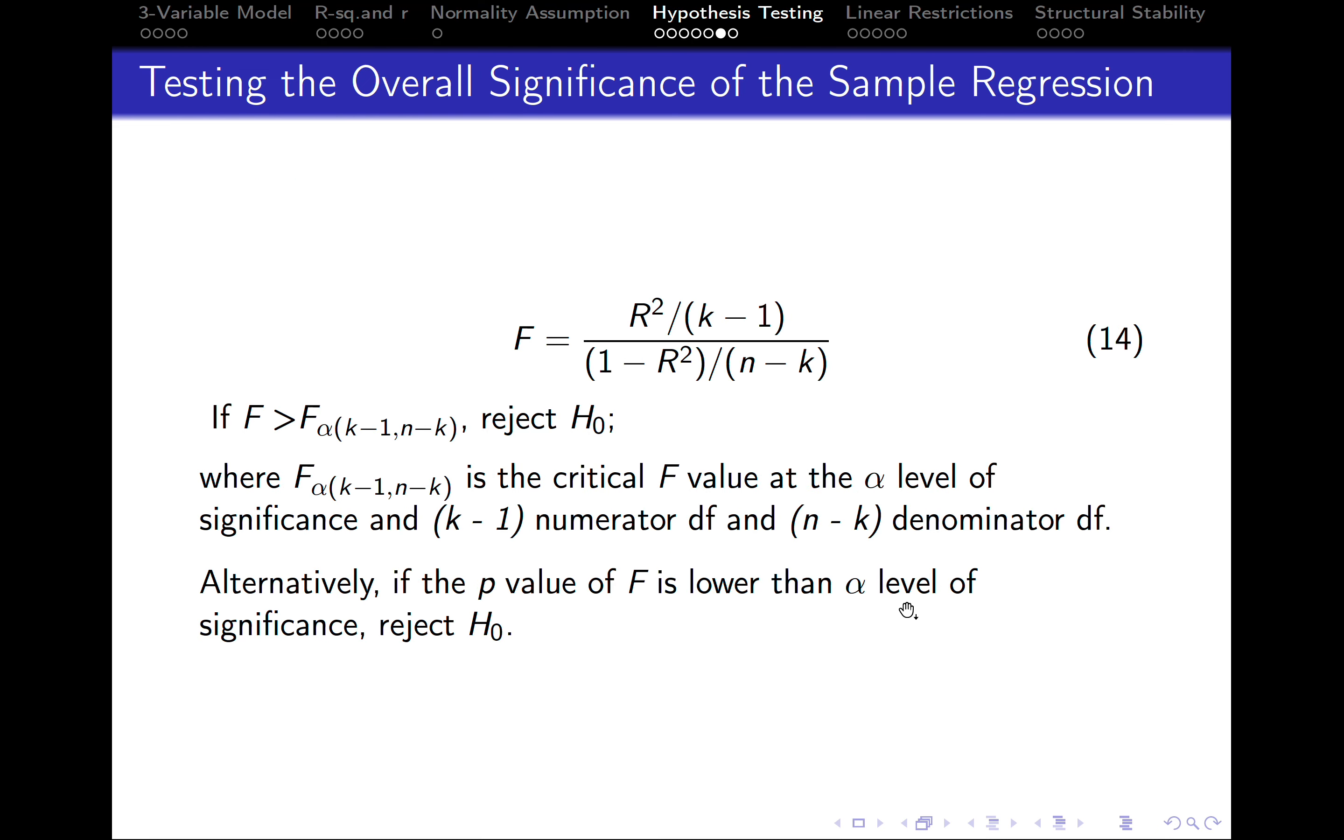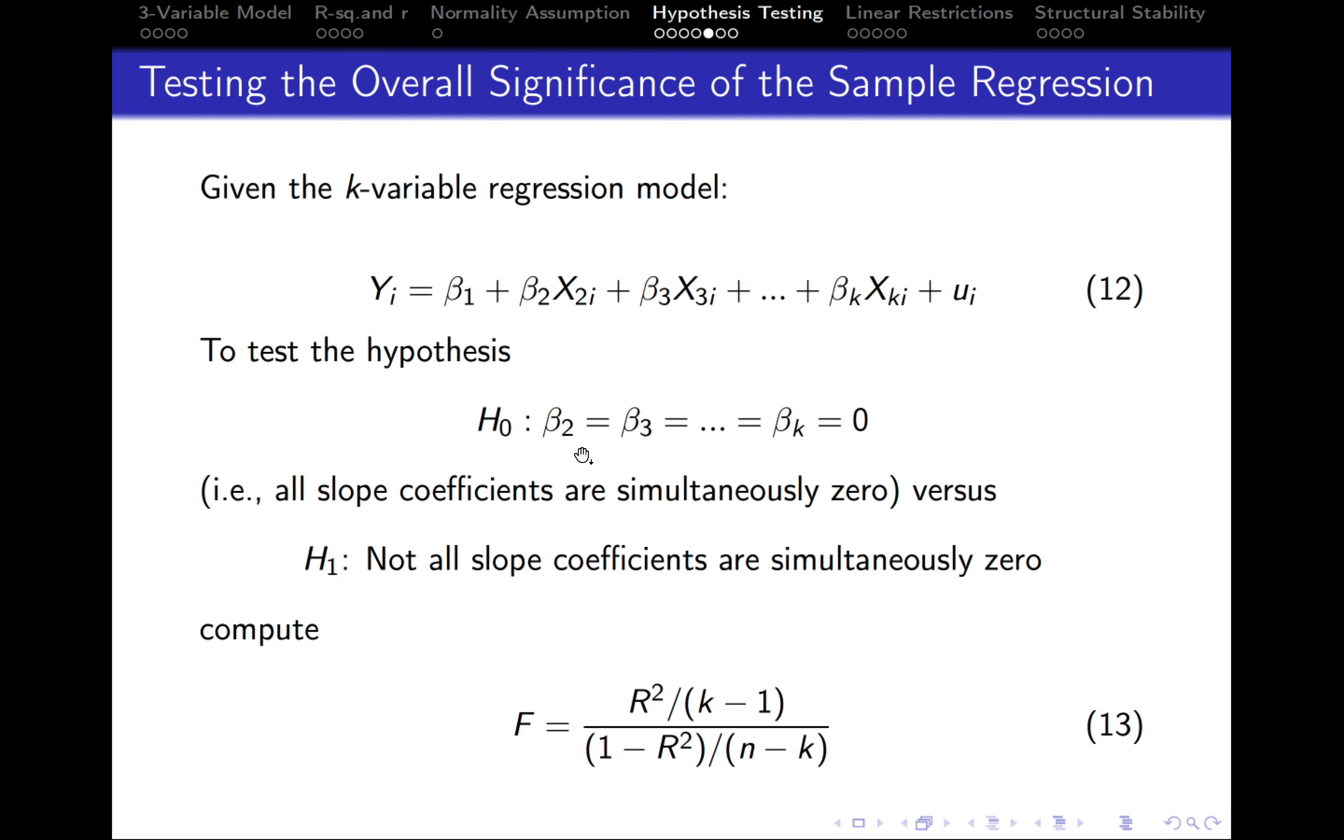Here is the equation once again. And let's see how we make the decision. So if the estimated f statistic is higher than the critical f statistic, we reject the null hypothesis. In a sense, we accept the alternative one that not all slope coefficients are simultaneously zero.